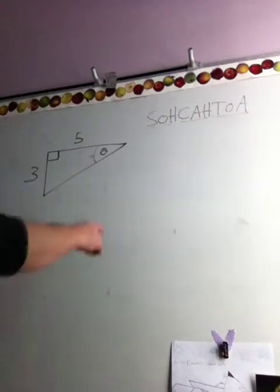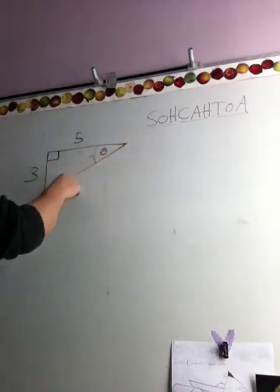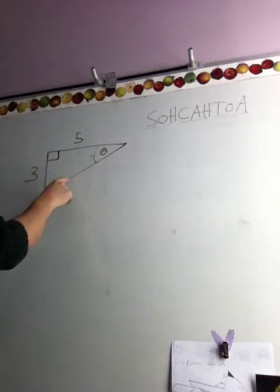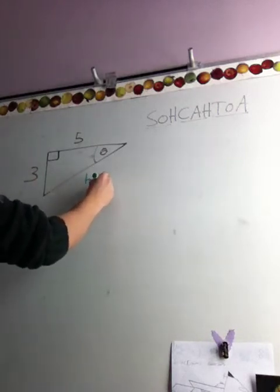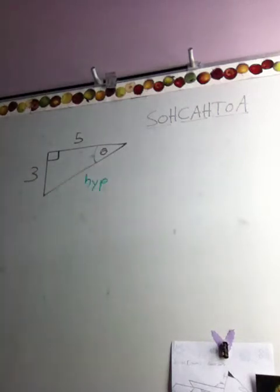So this side right here, it's opposite the 90 degree angle. It's also the longest side in the triangle. That is the hypotenuse. The hypotenuse is the side of the triangle that's opposite the 90 degree angle, and it will always be the longest side in the triangle.